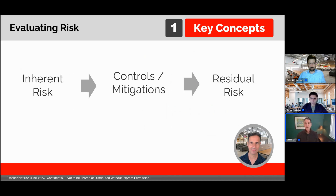The risk that's left over after we consider our mitigations is called the residual risk. In our security example, we've got our firewalls and our other protections, but we still understand that there is still a risk that remains when we're using the Internet.